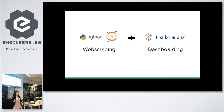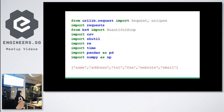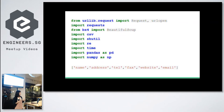I used Tableau to build the prototype. Tableau Public is free — there's a community where people publish their data visualization work. I'll go through the two things step by step. For the web scraping, I used Beautiful Soup and also Regular Expression, and I actually shared the code on my GitHub as well. I will show my GitHub link later.